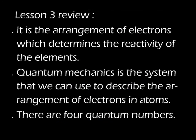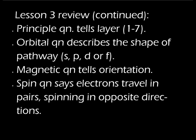Let's review what we've learned in lesson three. It is the arrangement of electrons which determines the reactivity of the elements. Quantum mechanics is the system we use to describe this arrangement of electrons in atoms. There were four quantum numbers. The first, the principal quantum number, told the layer or energy level on which the electrons were traveling — a whole number ranging from one to seven. The orbital quantum number told the shape of the path on which the electrons were traveling, with four possible shapes: s for spherical, p for pear-shaped, d possibly dumbbell, and f.